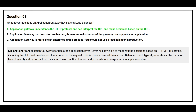The correct answer is Option A. An Application Gateway operates at the application layer, Layer 7, allowing it to make routing decisions based on HTTP or HTTPS traffic, including the URL, host headers, or other content in the request. This is more advanced than a load balancer, which typically operates at the transport layer, Layer 4, and performs load balancing based on IP addresses and ports without interpreting the application data.